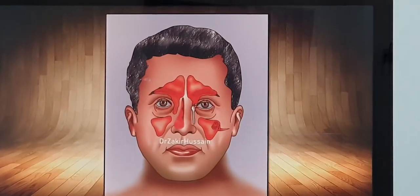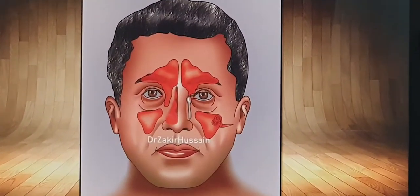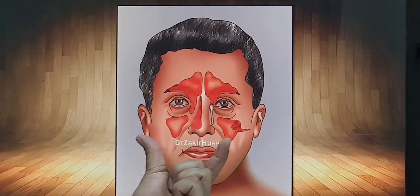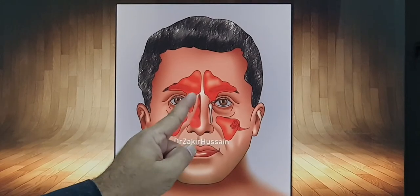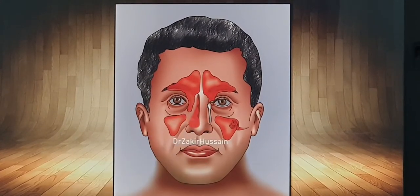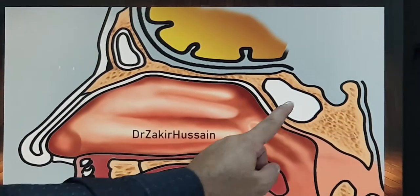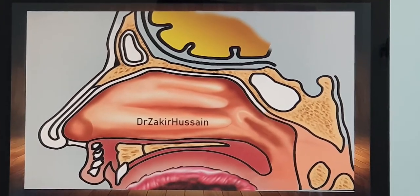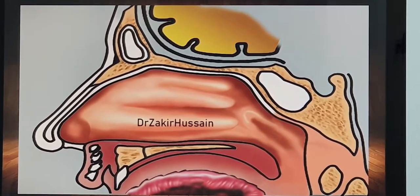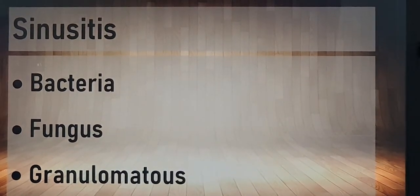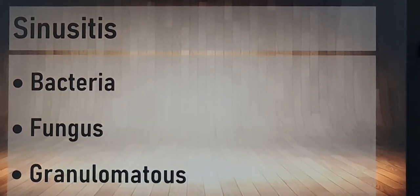We all have four sets of sinuses. This is the frontal sinus, maxillary sinus, and you have ethmoid sinus here. I have drawn only one side; it will be on both sides. And the last pair, which is seen way behind the nose, is the sphenoid sinus. So infection of the sinus means sinusitis, which can be because of bacteria, fungus, or any other cause.